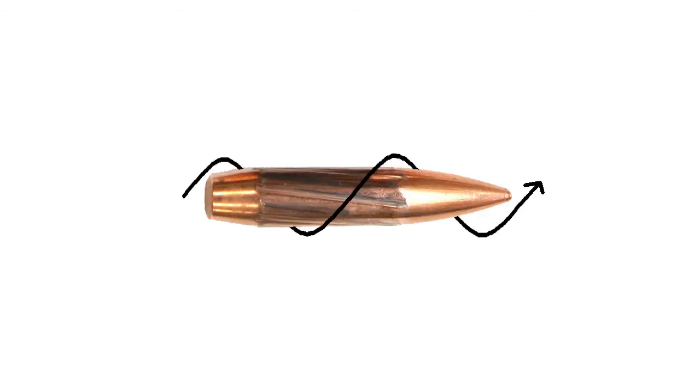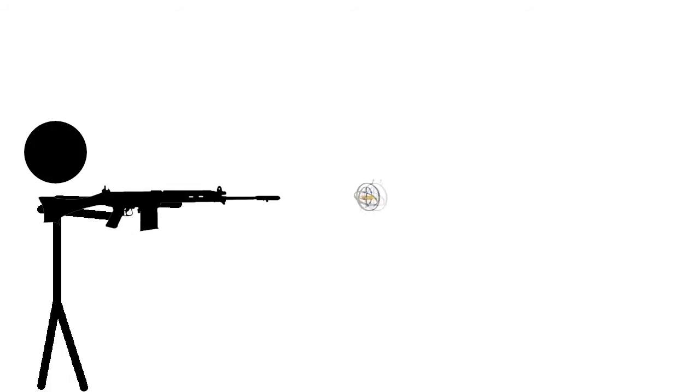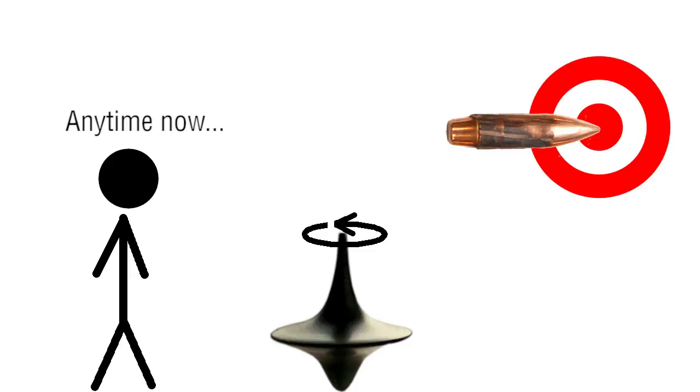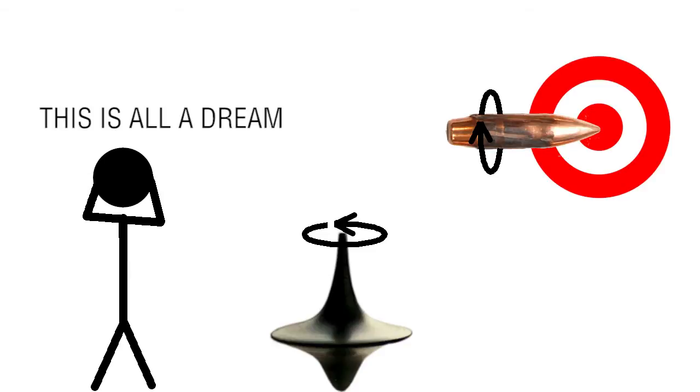By letting projectiles rotate along its flight axis, rifling essentially turned these projectiles into flying gyroscopes capable of resisting change to their trajectory. Just as a top can keep standing upright as long as it spins, a projectile can keep itself pointing on target as long as it maintains its spin as well.